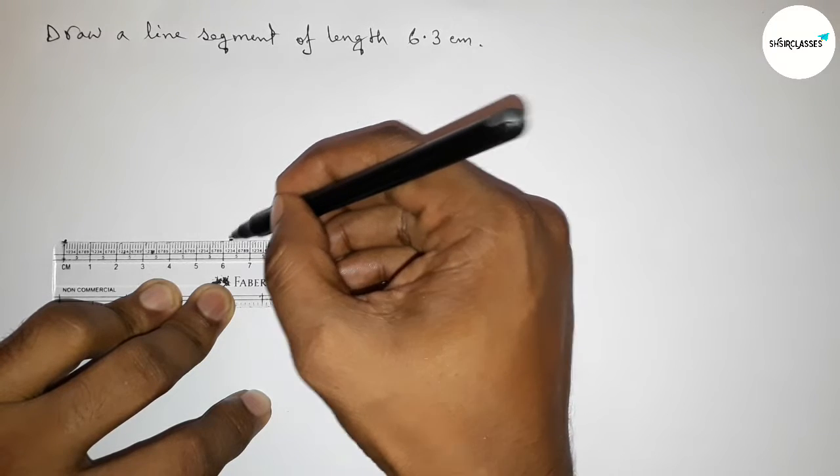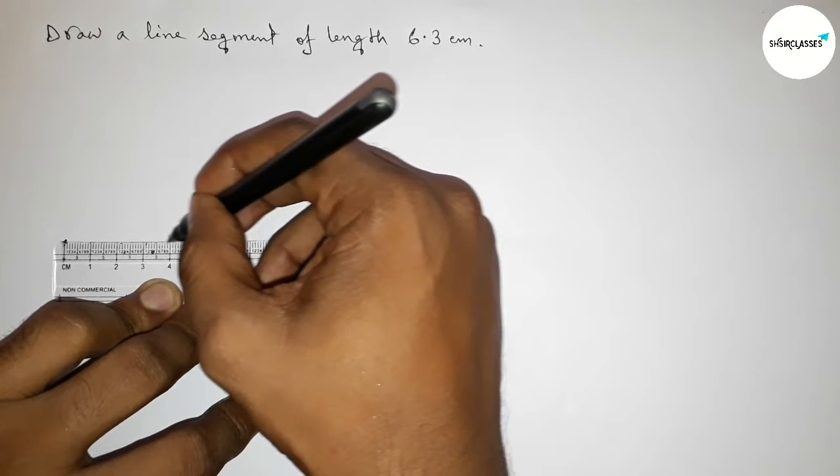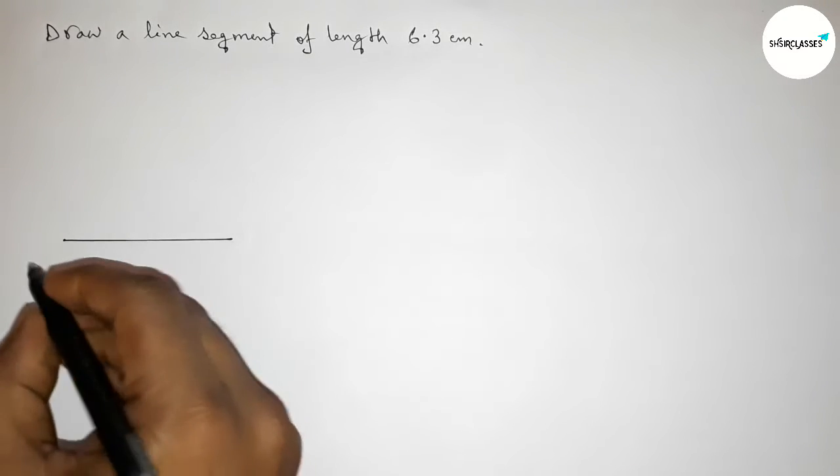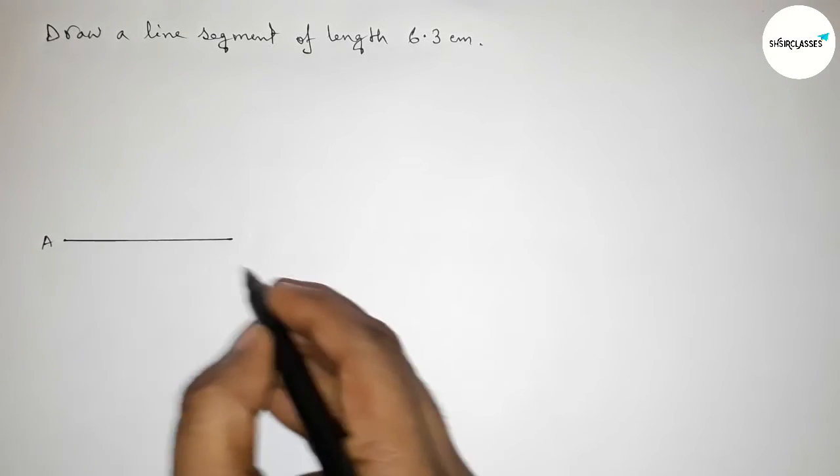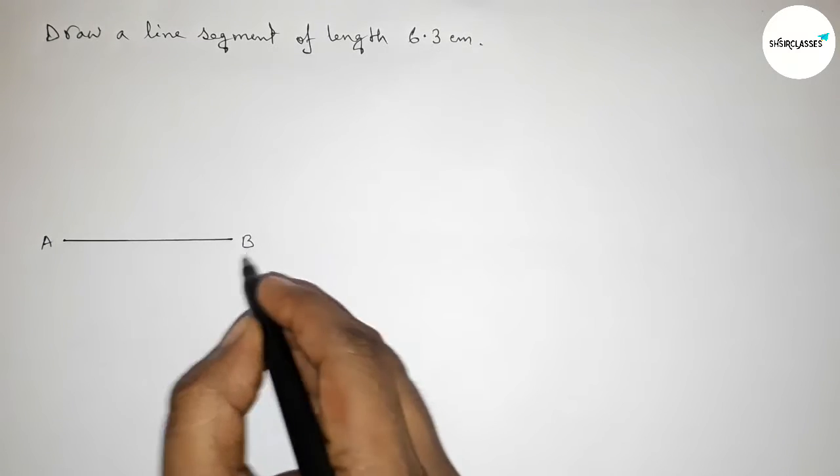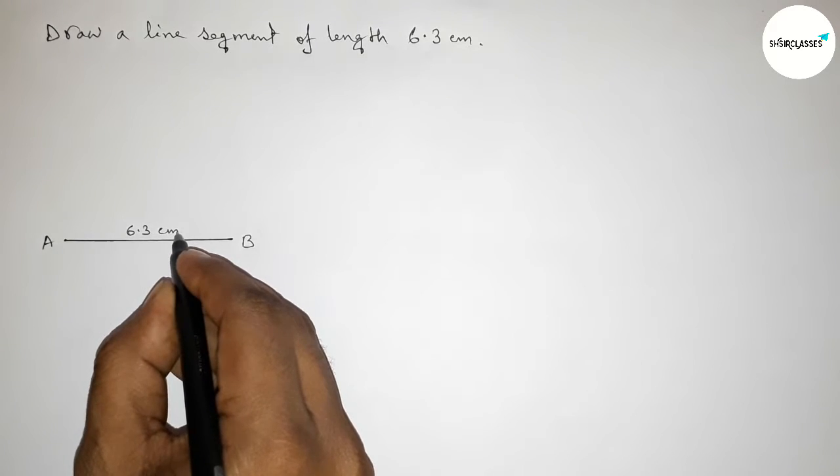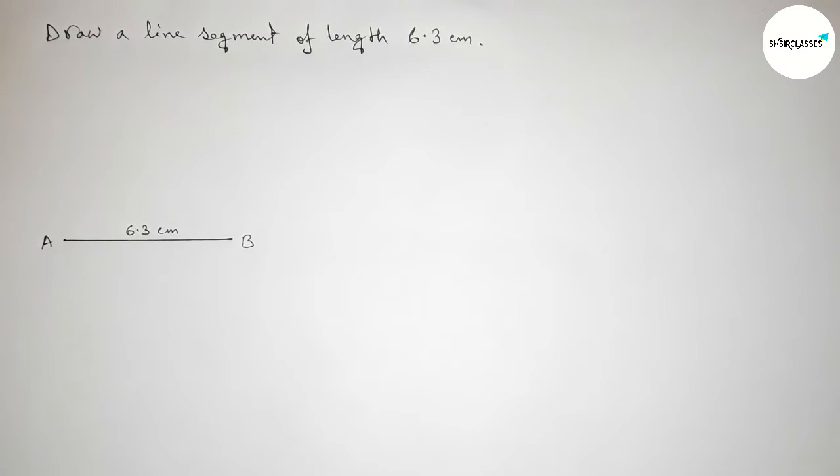Then joining this line. Okay, so now taking here point A and here B, so AB equals to 6.3 centimeters.